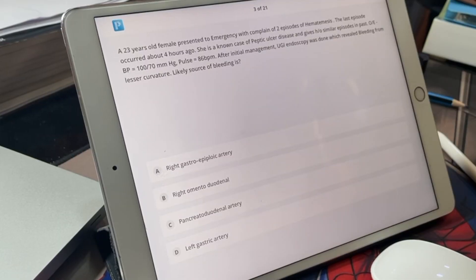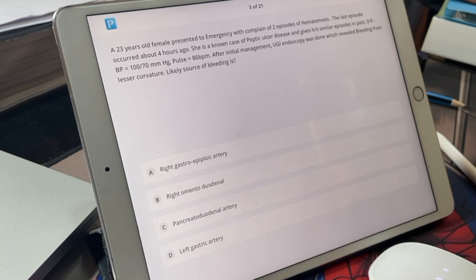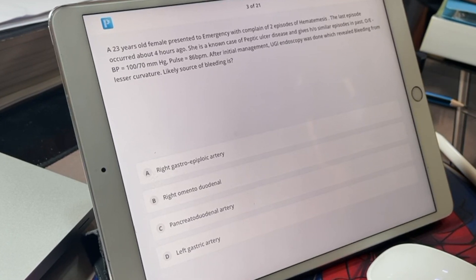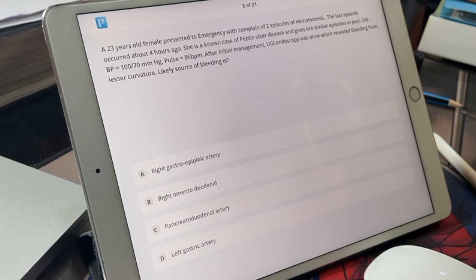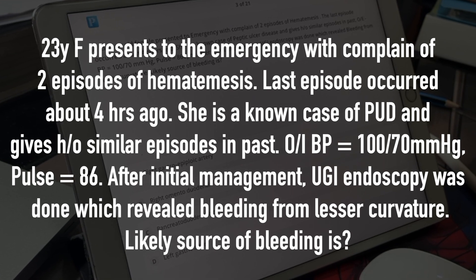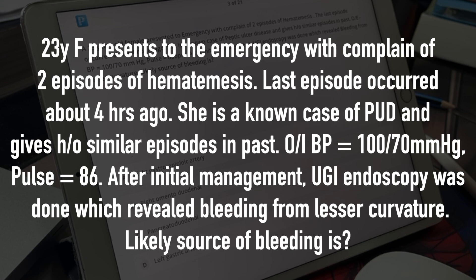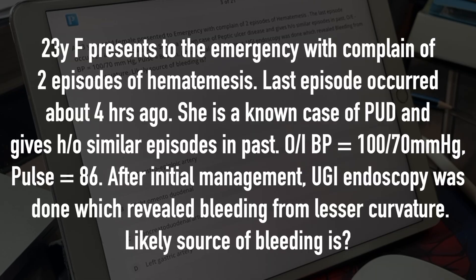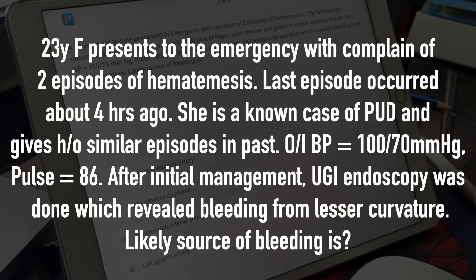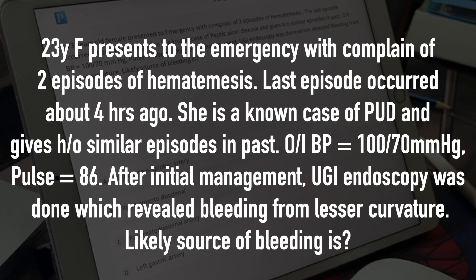This is a question and what I first see is the last line — it says 'likely source of bleeding is.' So they are asking the source of bleeding, and the four options are probably the arteries in the abdomen, and as I can see, it is from the foregut. Now let's read the question. A 23-year-old female presented to the emergency with complaint of two episodes of hematemesis. The last episode occurred about four hours ago. She is a known case of peptic ulcer disease. On examination, BP is 100/70, pulse is 86, and after initial management, upper GI endoscopy was done which revealed bleeding from the lesser curvature.